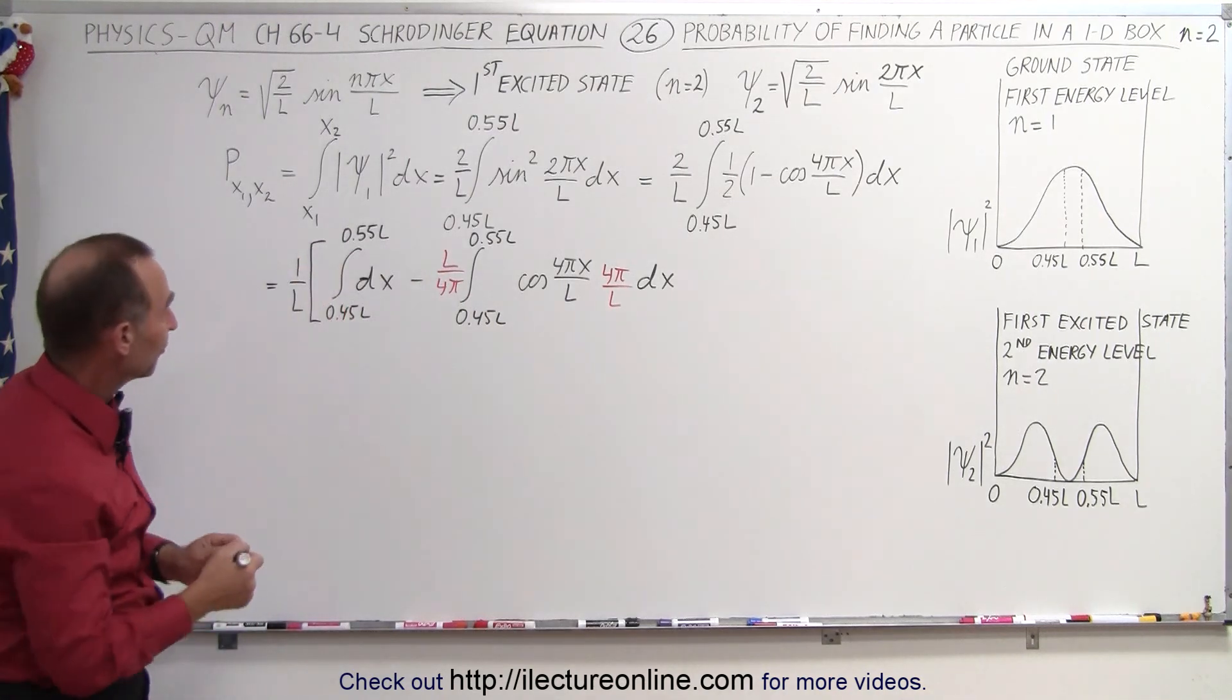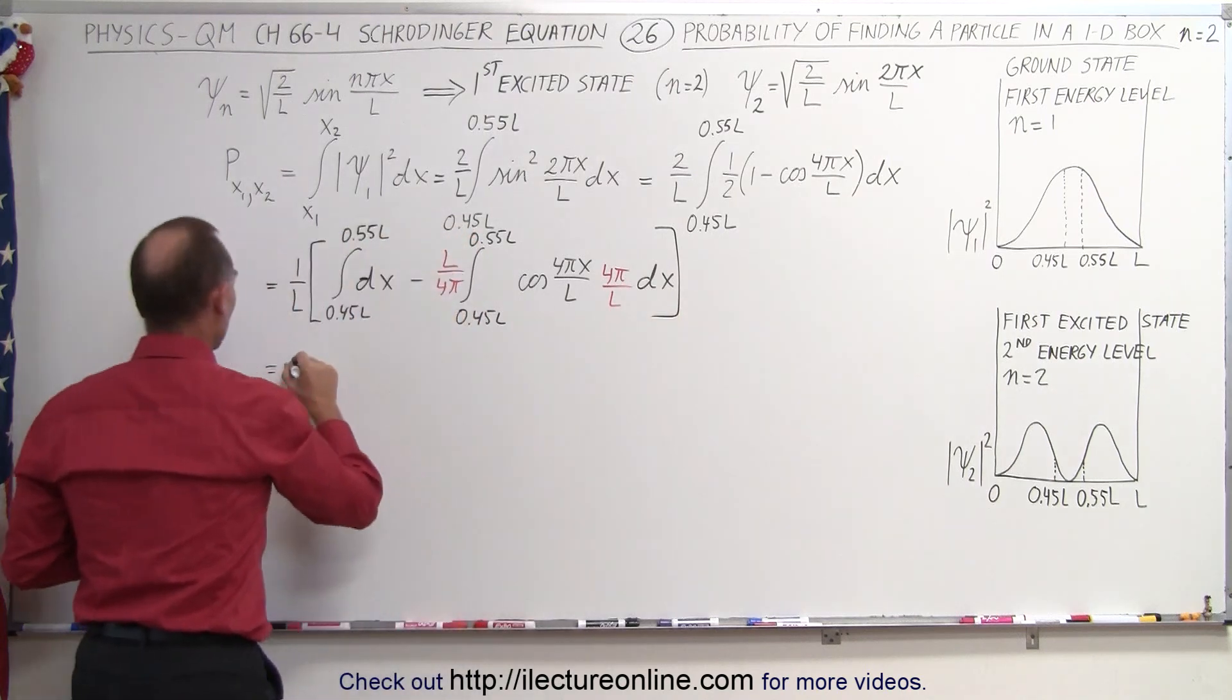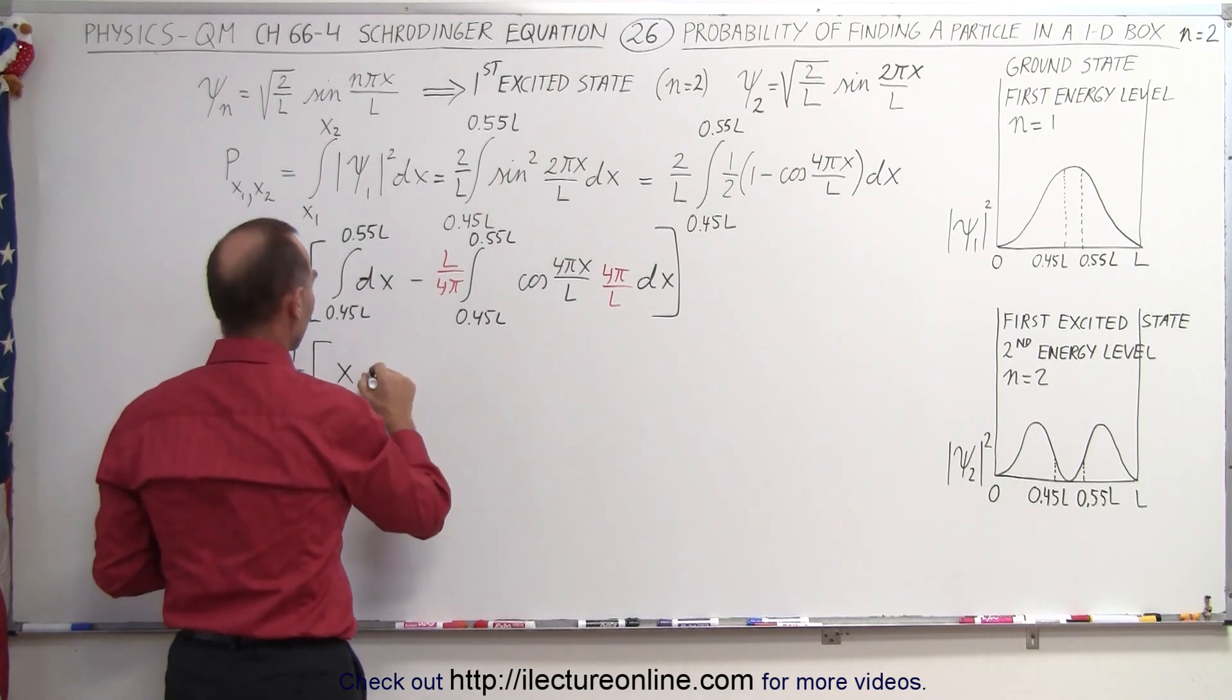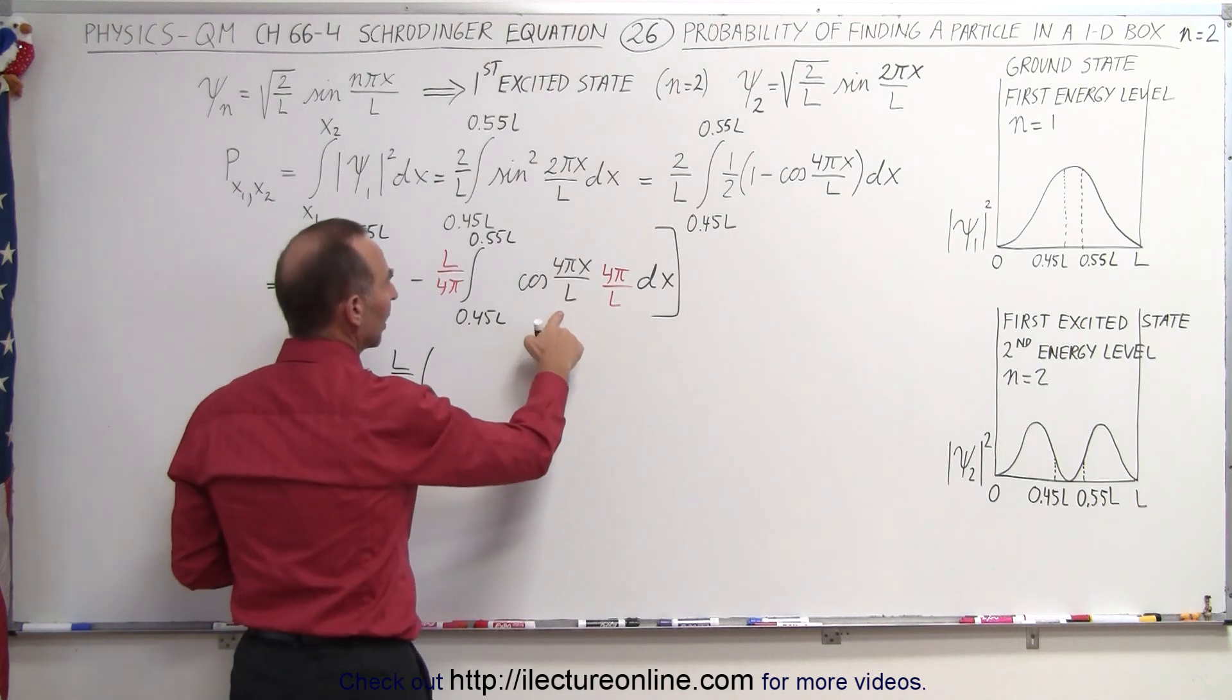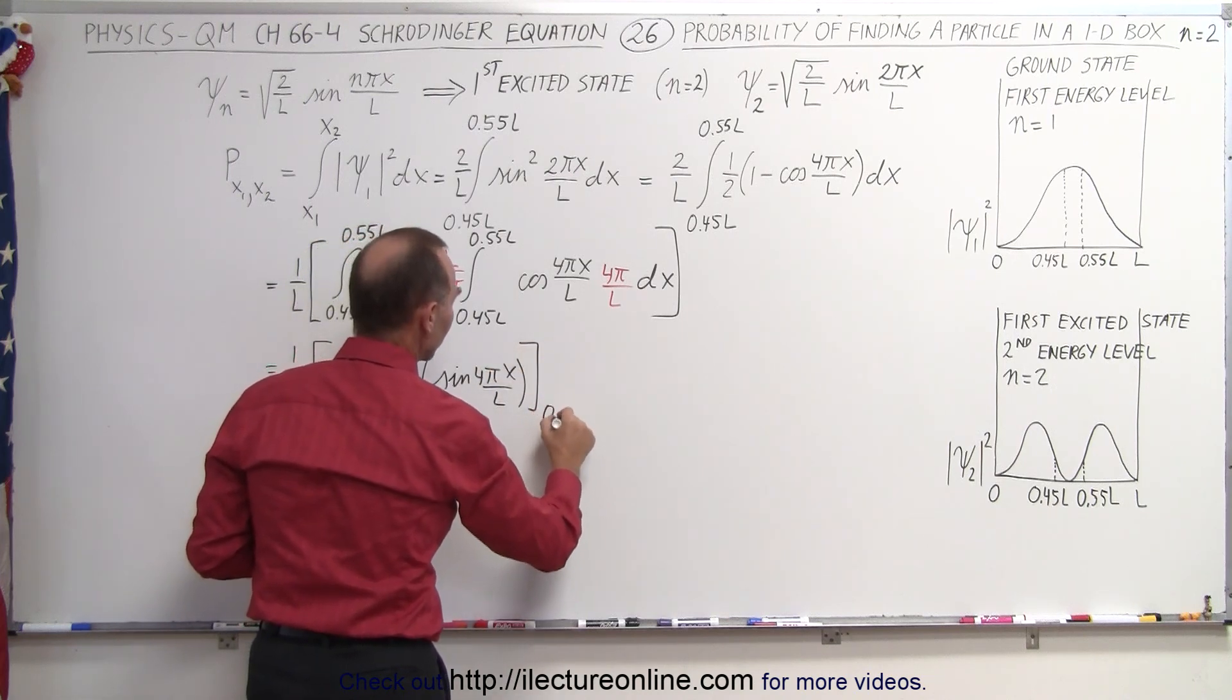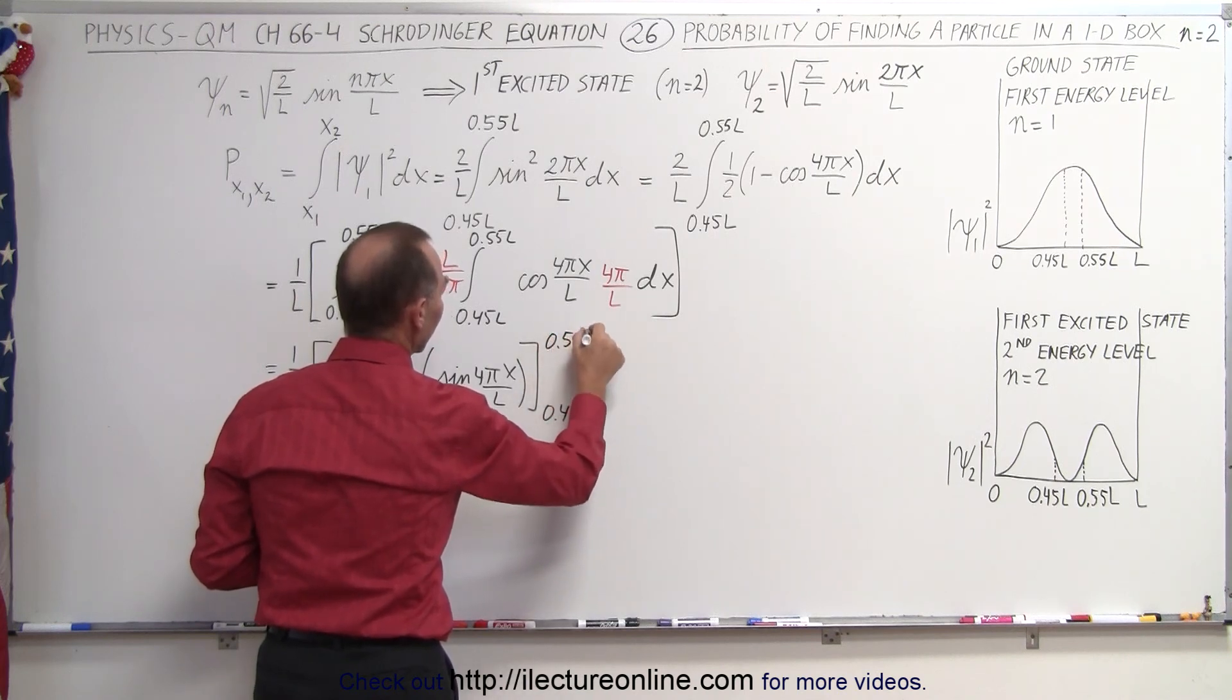When we integrate we get the following. This is equal to, let me close the bracket here, 1 over L times x and then here we have minus L over 4π times the integral of this and the integral of this would be the sine of 4πx over L and evaluate the whole thing from 0.45L to 0.55L.